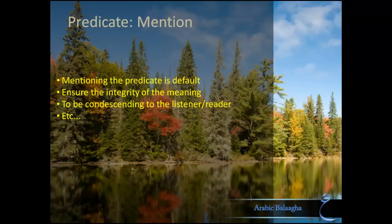As for mentioning the predicate of a sentence, the primary reason is that mentioning is the default. As long as there's nothing causing us to opt away from the default, we'll mention the predicate. But there are some reasons beyond this that particularly encourage mentioning the predicate — we've seen many of those from the previous chapter on mentioning the subject. One reason is to avoid confusing or altering the meaning of the sentence. Another reason is to be condescending to the listener and spell everything out for him.